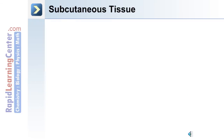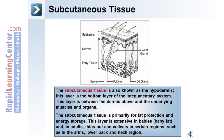Beneath the dermal layer of the skin is the subcutaneous tissue, or the hypodermis. This layer is the bottom layer of the integumentary system, between the dermis and the underlying muscles and organs. This tissue is primarily for fat protection and energy storage. The layer is extensive in babies, where it's called baby fat. In adults, the subcutaneous tissue thins out and disperses, collecting in certain regions such as the arms, the lower back, and the neck region.